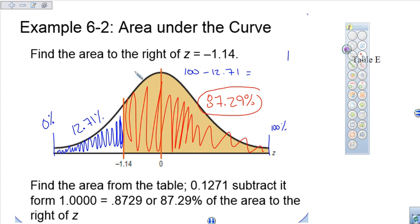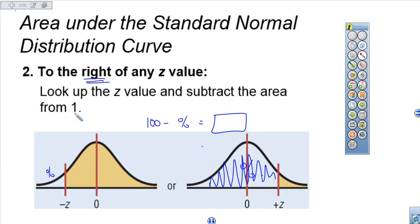That's how we find the area to the right under a normal distribution curve. Now, let me just address what they said in our problem here. You'll notice they didn't say use 100, they said subtract from 1. So if I come back over here, they say subtract from 1.